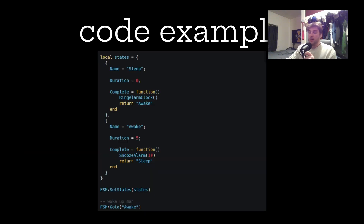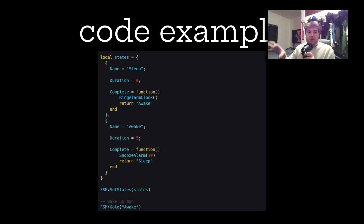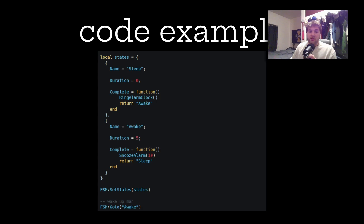You'll notice there's a complete function definition. When a state is completed it does some stuff and then returns the state it should move into next. When we complete the sleep state we ring the alarm clock and wake up. In the awake state we're awake for five minutes, then complete the awake function, snooze for 10, and go to the sleep state. The sleep state has duration zero, meaning we sleep as long as we want until something pulls us out.